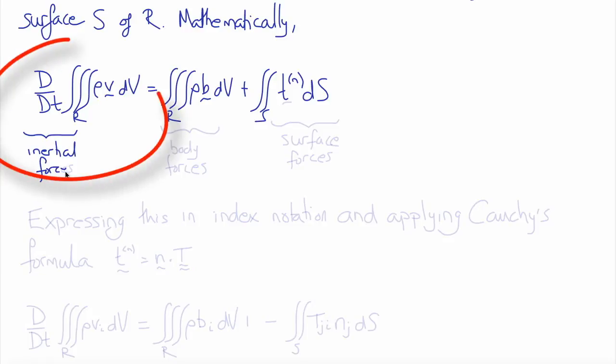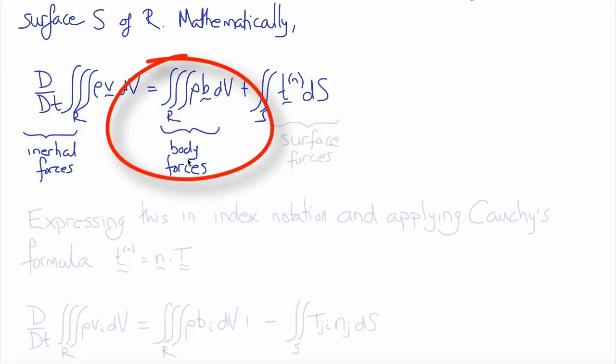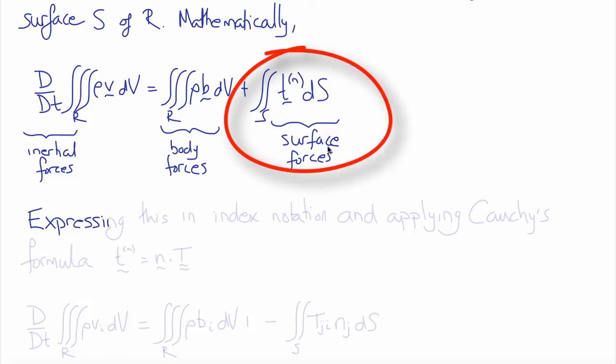The first term are the inertial forces, the rate of change of mass times velocity. The second term are the body forces, the integral of the body forces per unit mass times mass per unit volume over volume. The third term are the surface forces, the integral of all the surface tractions over S.